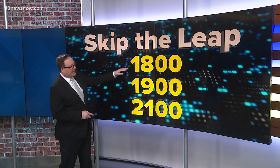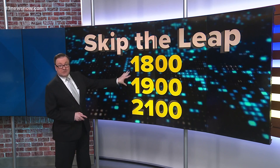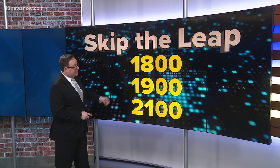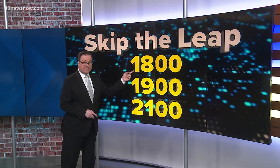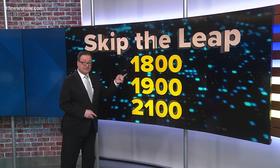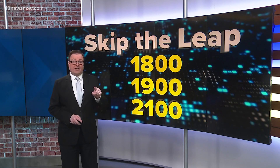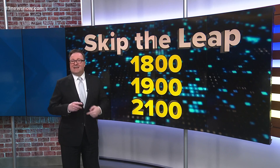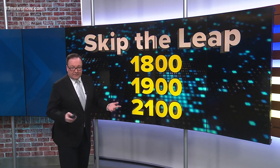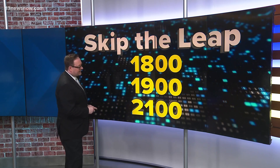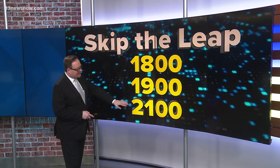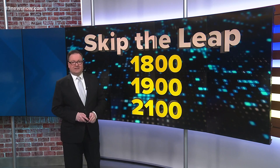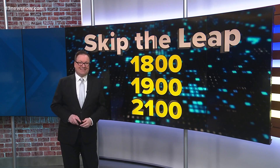Now, why? 1800, 1900 — supposed to be leap years, we skipped that leap day. If the year is divisible by 100, that's when we skip the leap. But if it's divisible evenly by 400, then you don't skip a leap day. That's just to make up for those extra 11 minutes that we add every four years. So our next leap year where we skip the leap will be 2100. And I hope to see you then.